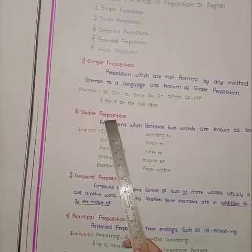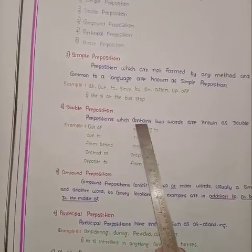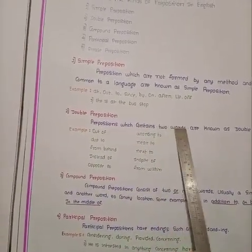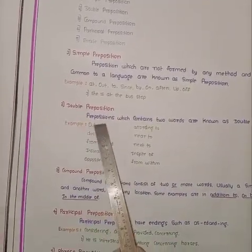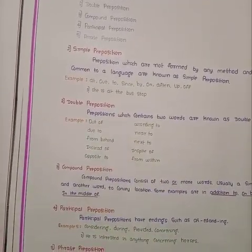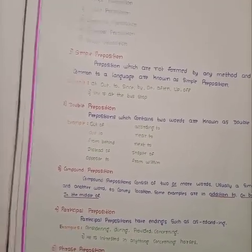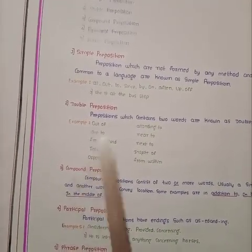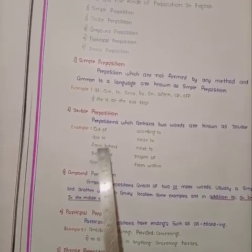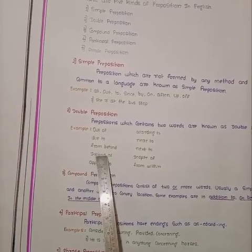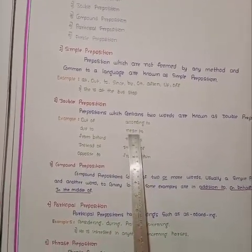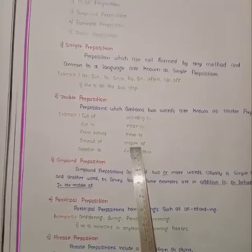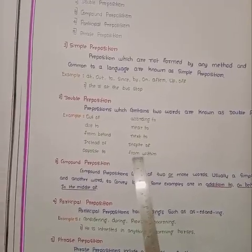Second one: Double preposition. Prepositions which contain two words are known as double prepositions. It means double means two — a preposition which contains two words is called double preposition. Examples: Out of, Due to, From behind, Instead of, Opposite to, According to, Near to, Next to, In spite of, From within.